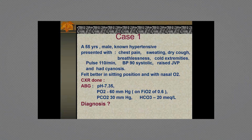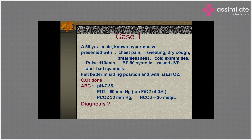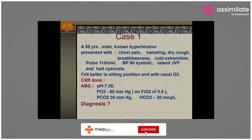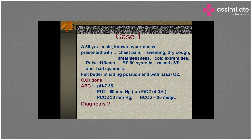Let us discuss respiratory failure with the help of some cases. Case one is a 55-year-old male, known hypertensive, presented with chest pain, sweating, dry cough, breathlessness, cold extremities, tachycardia, blood pressure 90 systolic, raised JVP, and cyanosis.